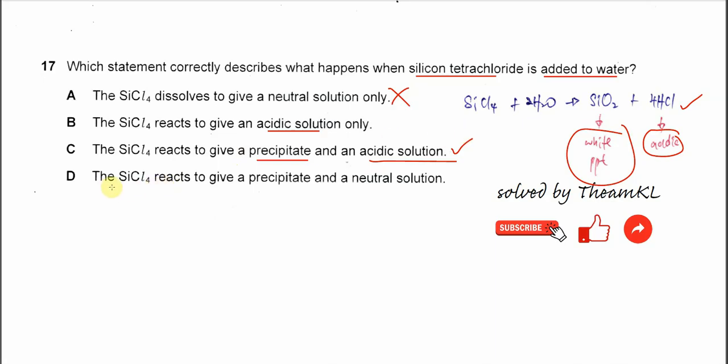Option D: The SiCl4 reacts to give a precipitate and neutral solution. Wrong. The answer is confirmed as C. That's all, thank you.